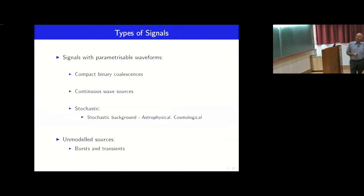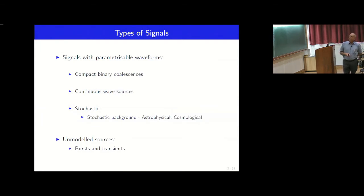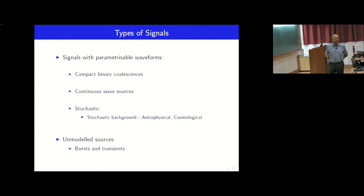So then we have types of signals. Signals with parametrizable waveforms, those are the compact binary coalescences. There are parameters there, continuous wave sources. There also there are parameters of direction, whatever could be spin down parameters and things like that.